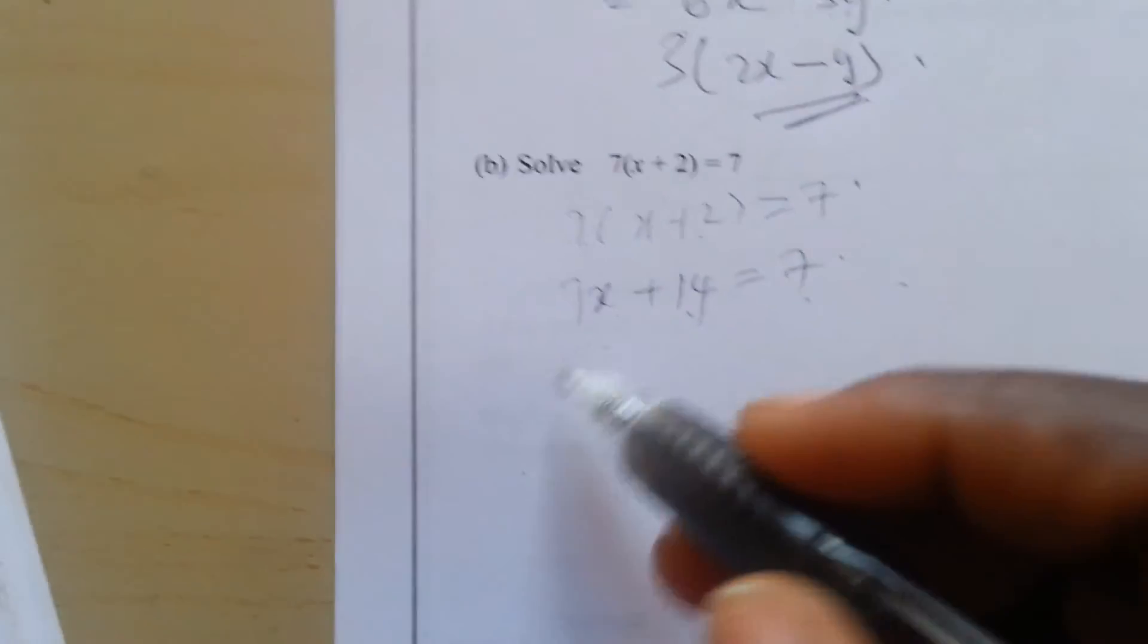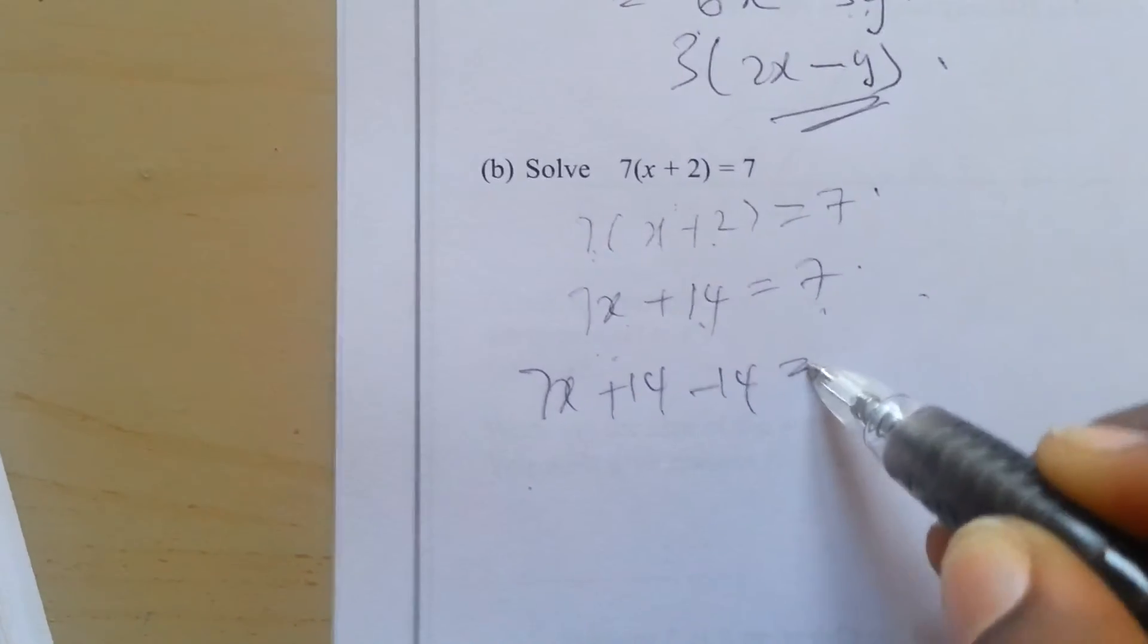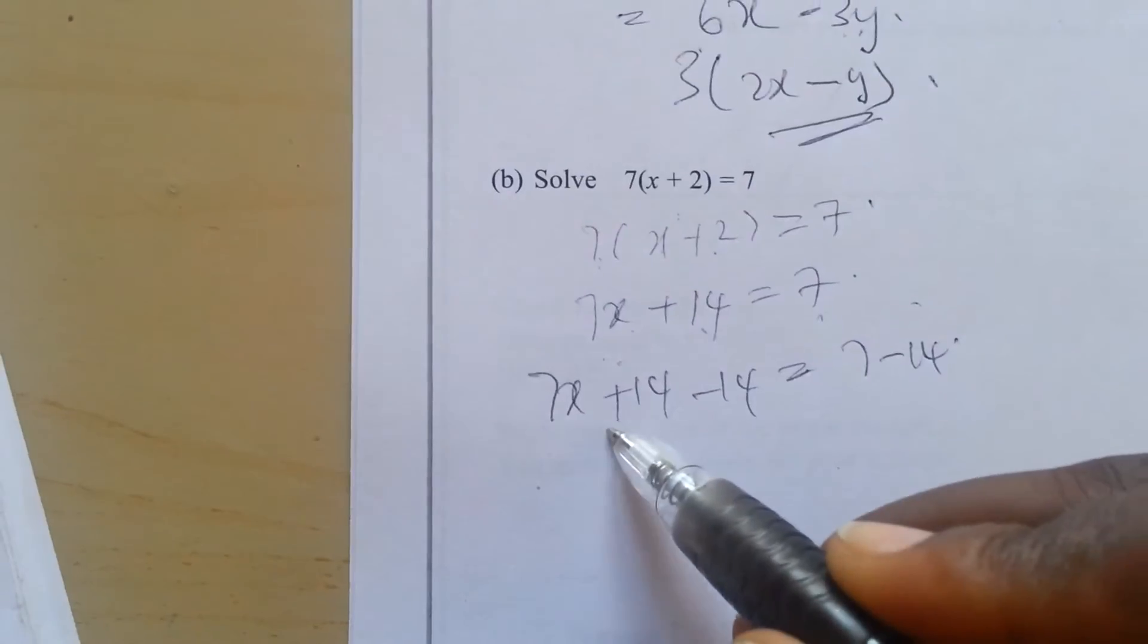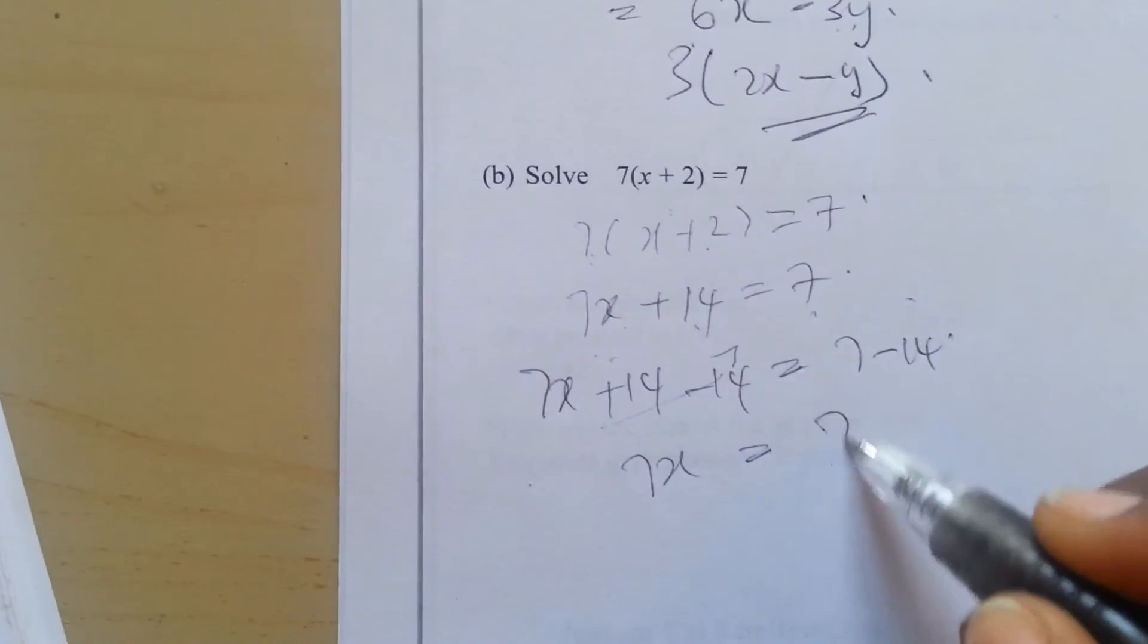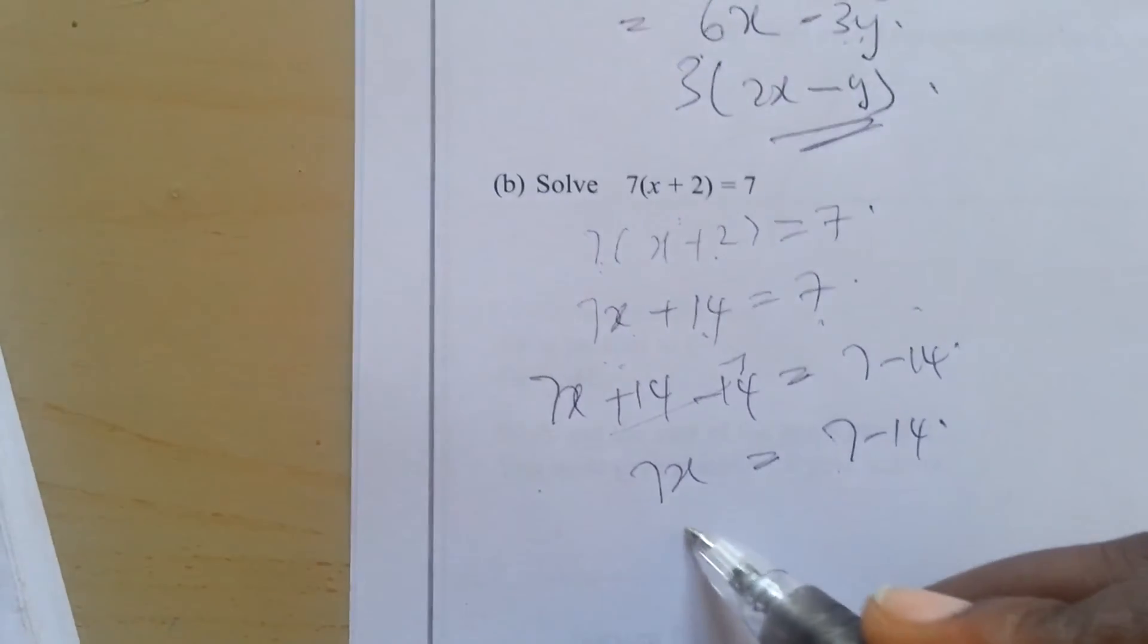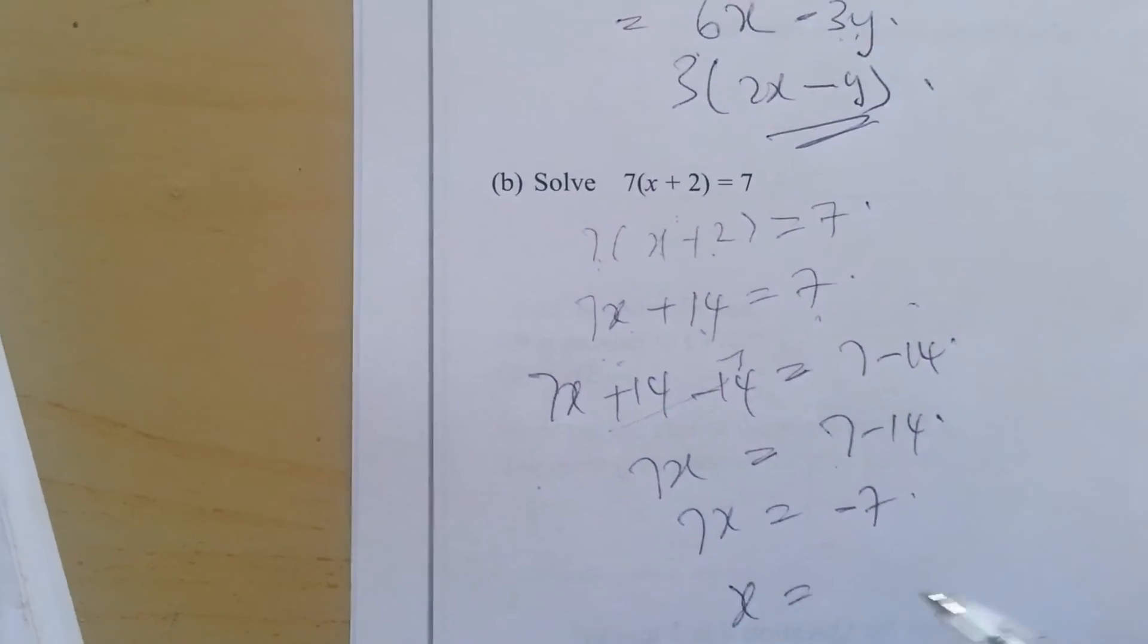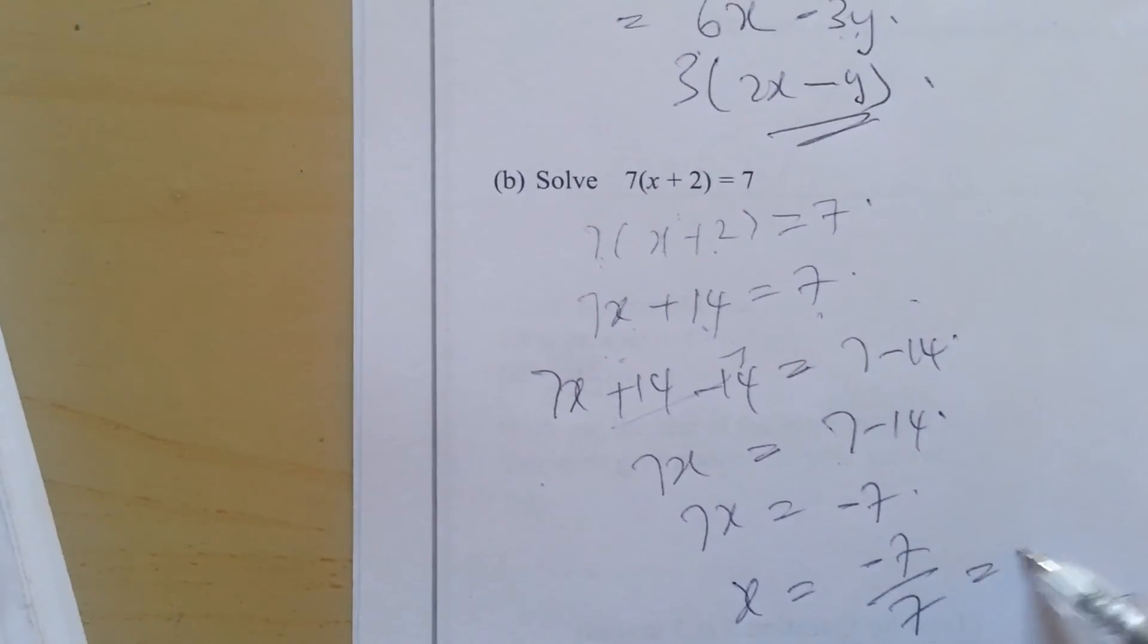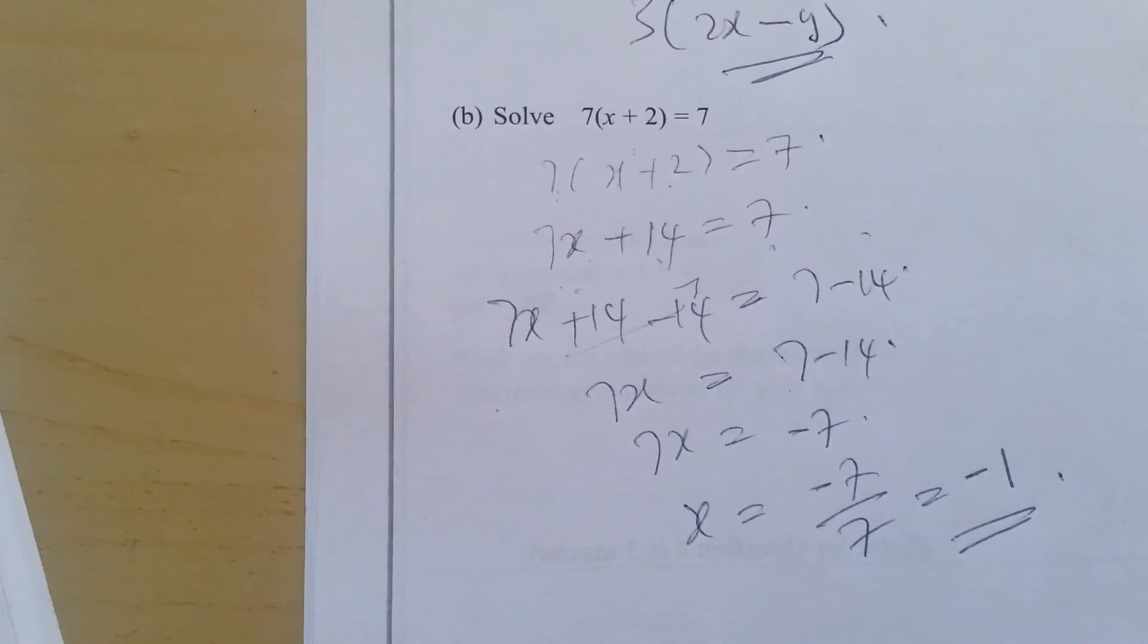So you have 7x plus 14 minus 14 equal to 7 minus 14. This gives 7x equal to 7 minus 14, so 7x would be minus 7. Then x would be minus 7 divided by 7, which is minus 1.